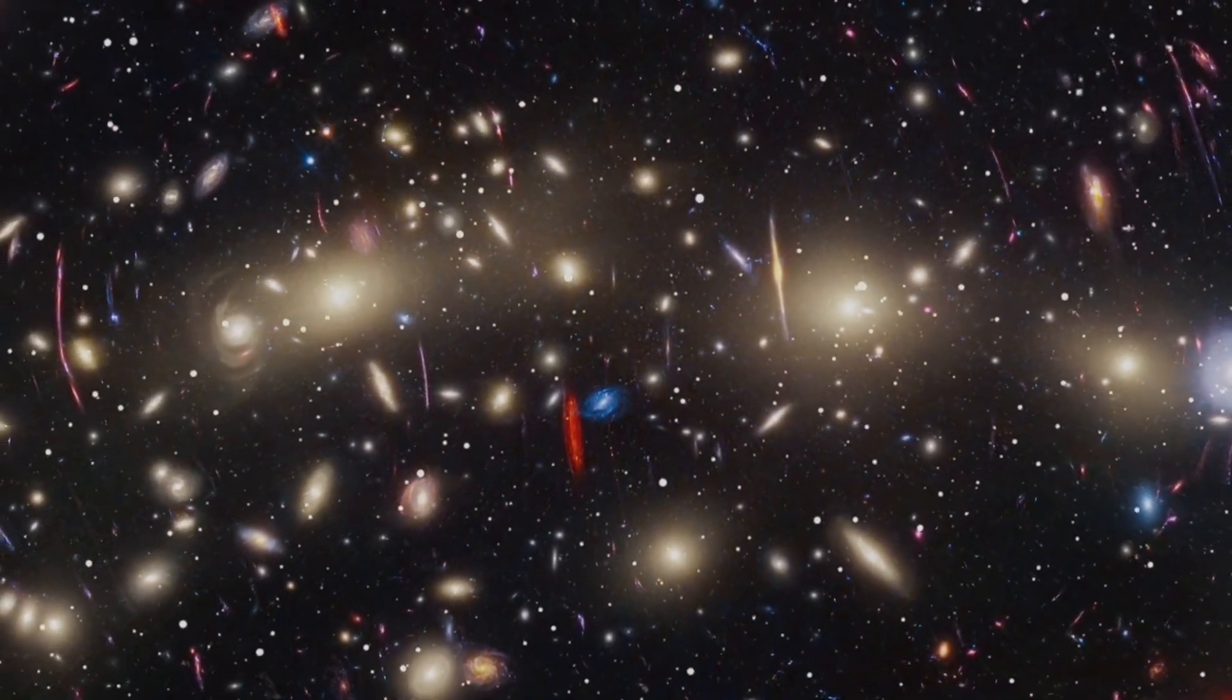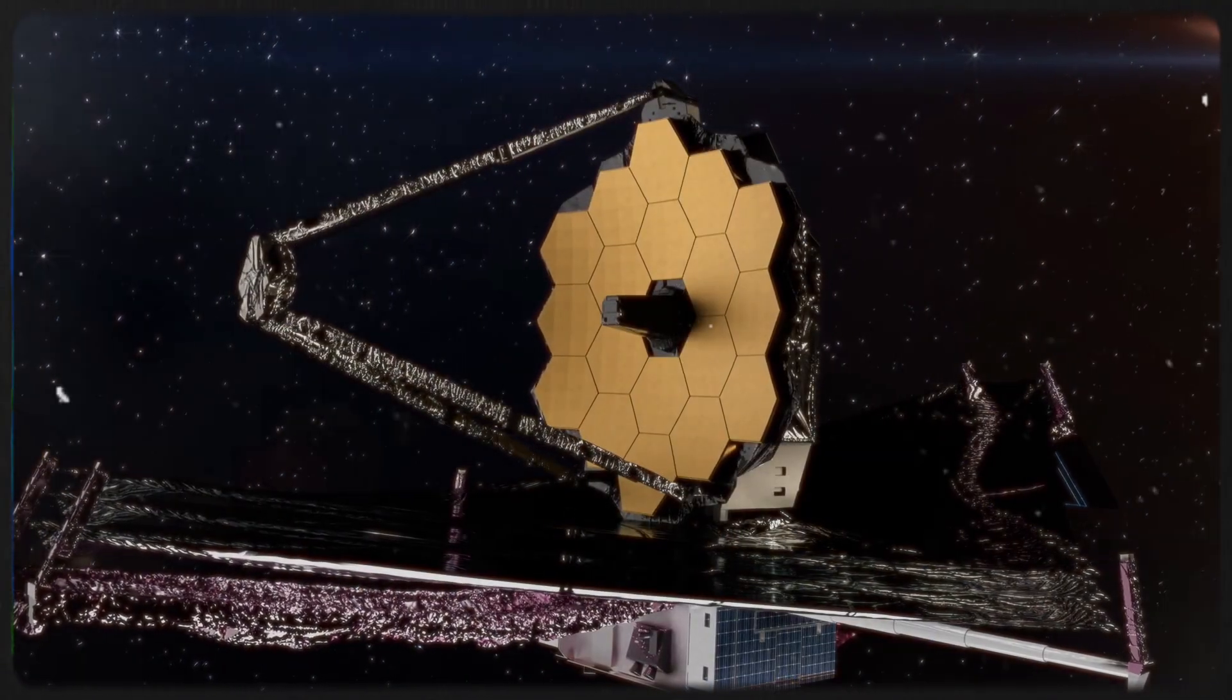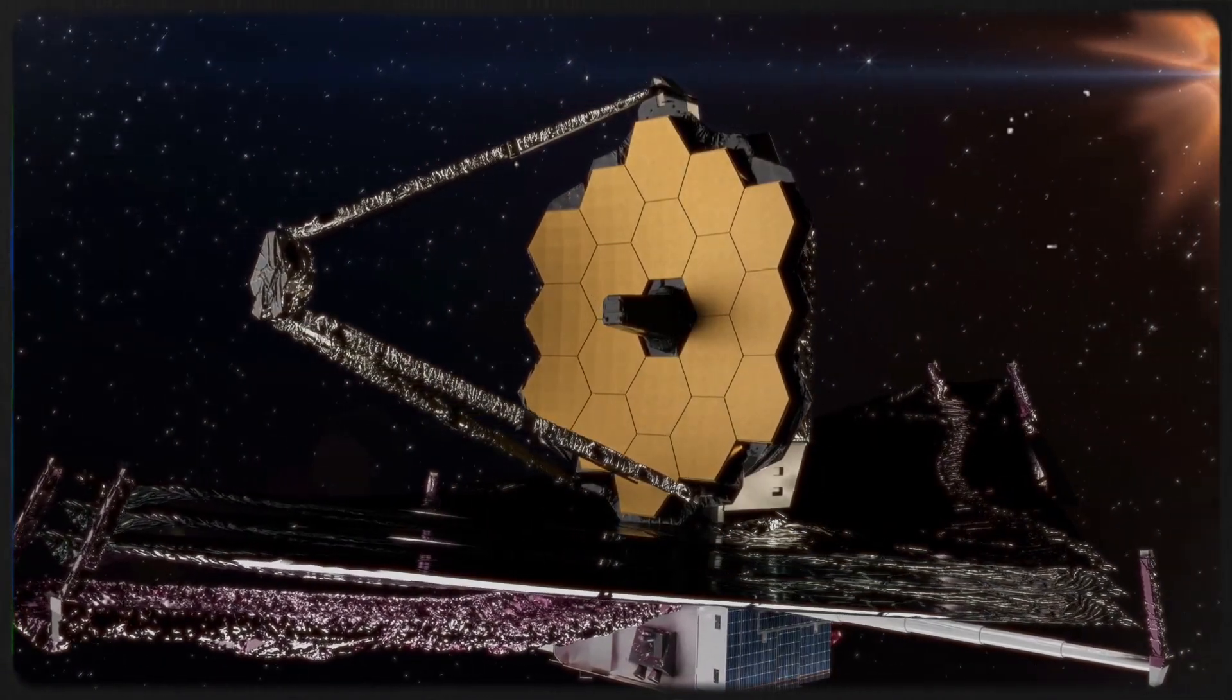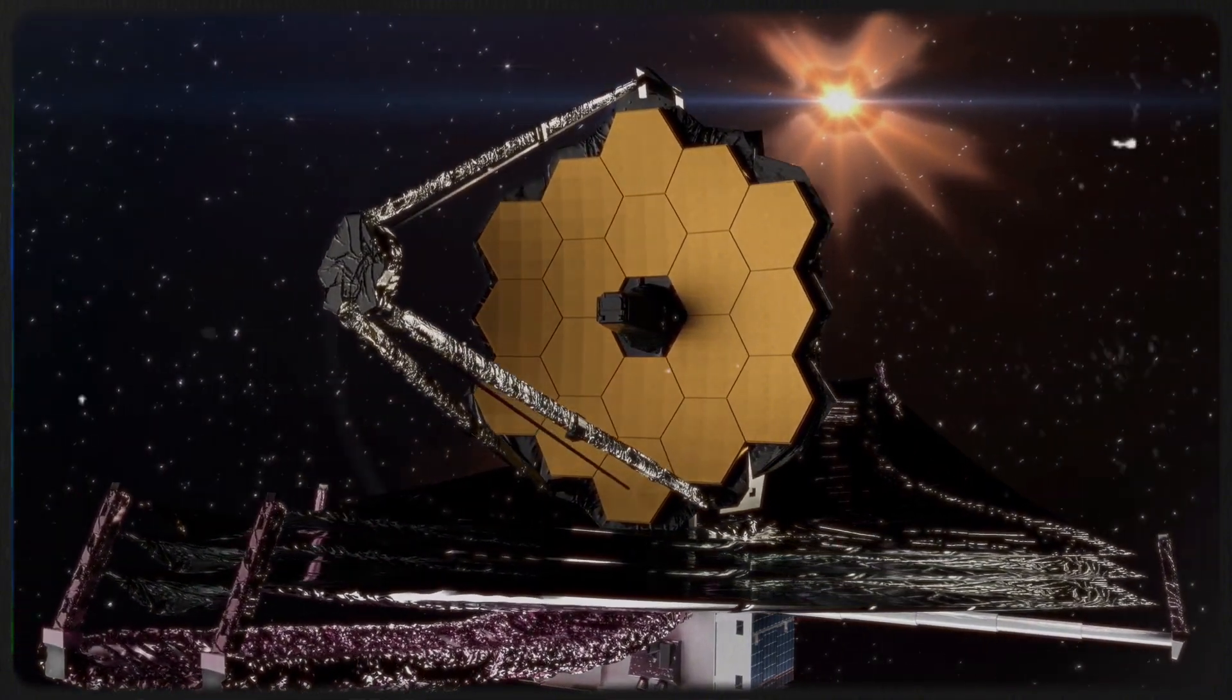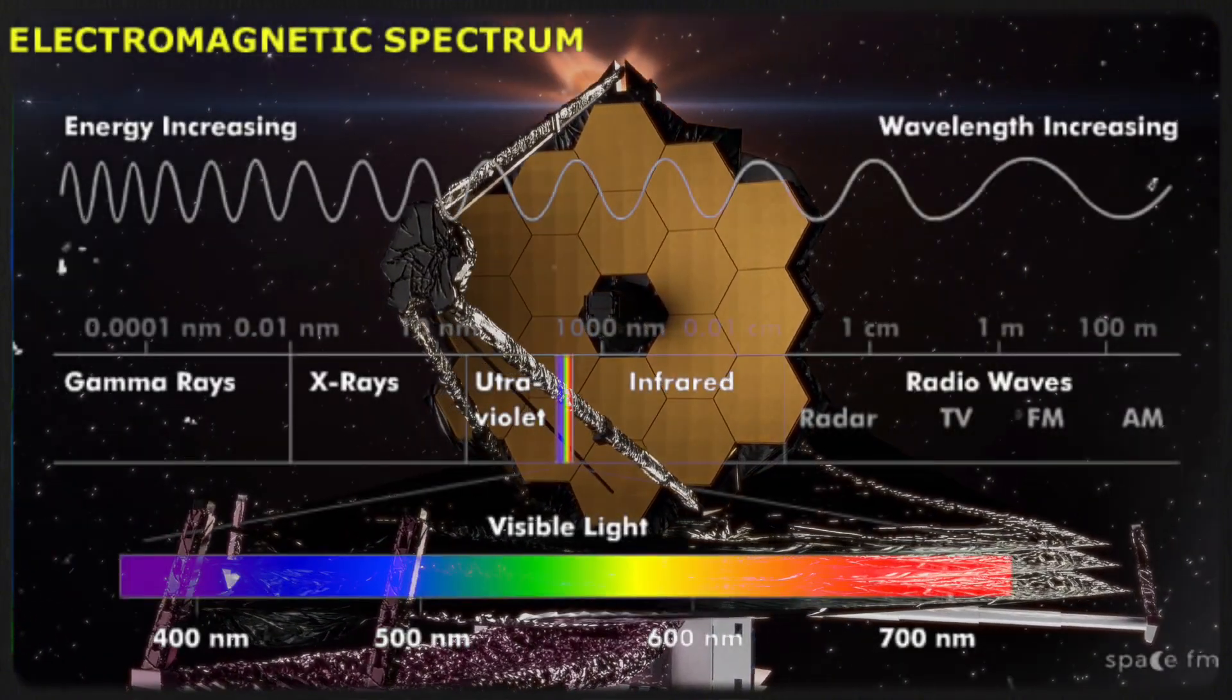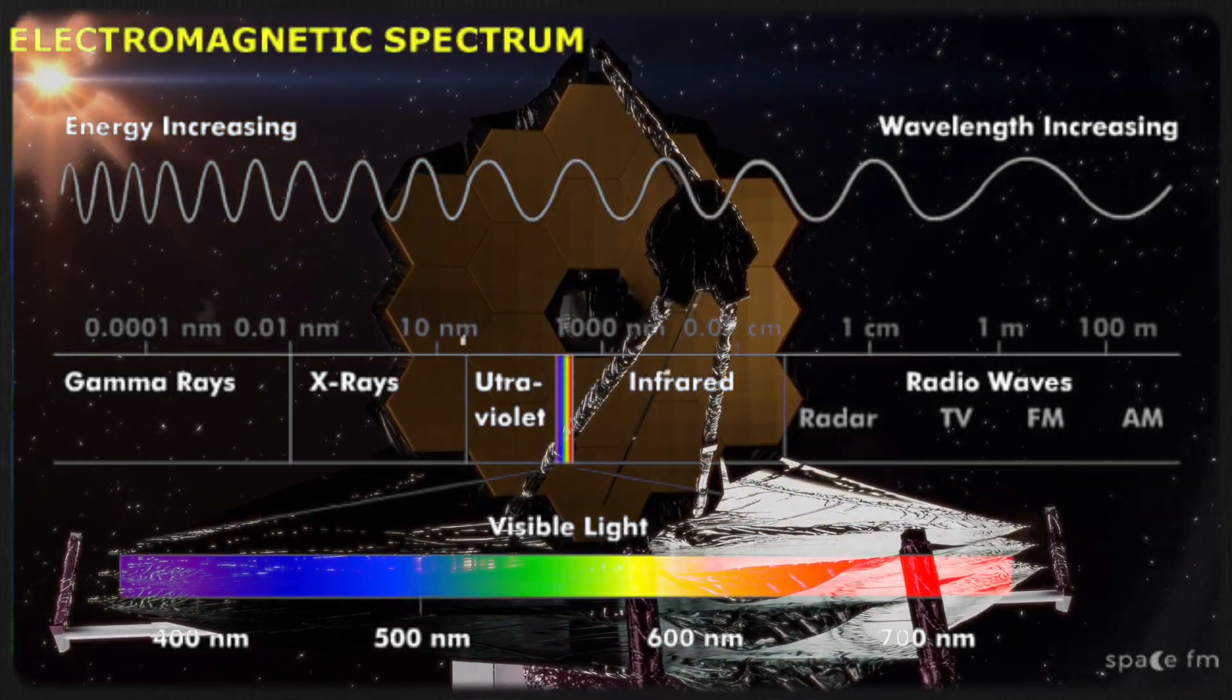Webb's NIRCAM achieved this thanks to its superior sensitivity and resolution, far outstripping that of Hubble and other optical telescopes. Plus, its ability to observe in longer wavelengths allows it to peer through the dust and gather clearer information.